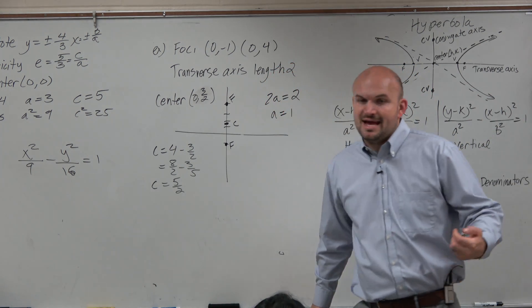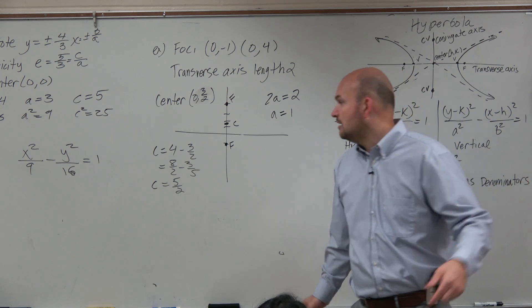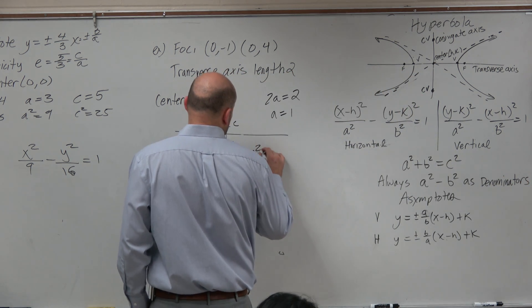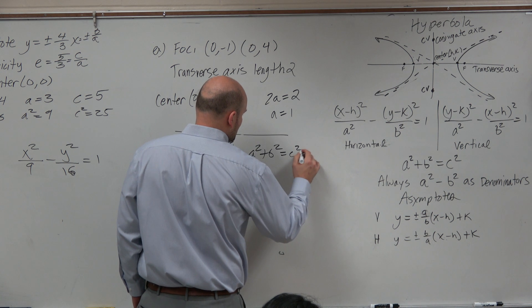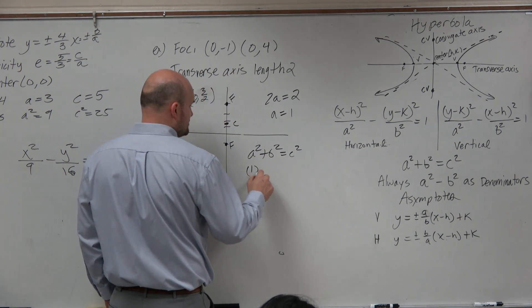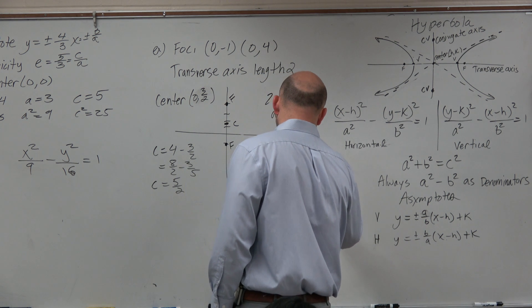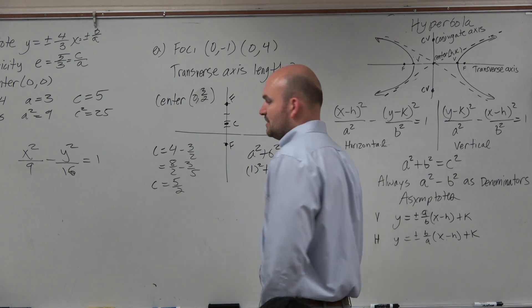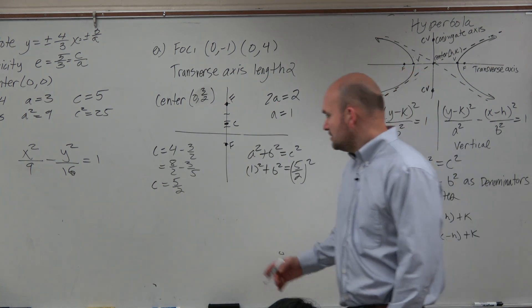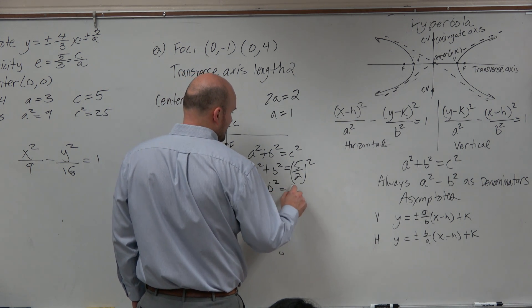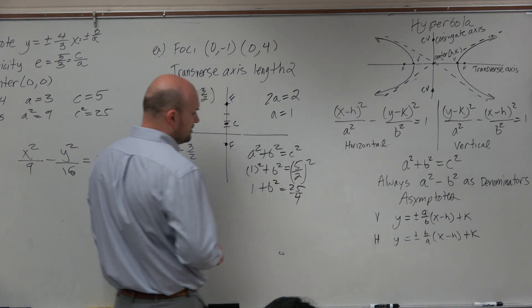Well guys, if I know a and I know c, can I find b? Of course. a squared plus b squared equals c squared. So we have 1 squared plus b squared equals 5 halves squared. That's not going to be fun. So 1 plus b squared equals 25 fourths.